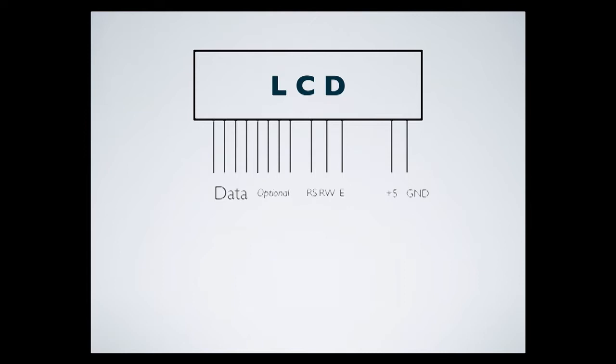We only used four data bits, plus RS, RW, and E — that's seven of the 11 pins. That would leave you with four additional digital pins to do something with. You can see how quickly you can use up resources on an Arduino.